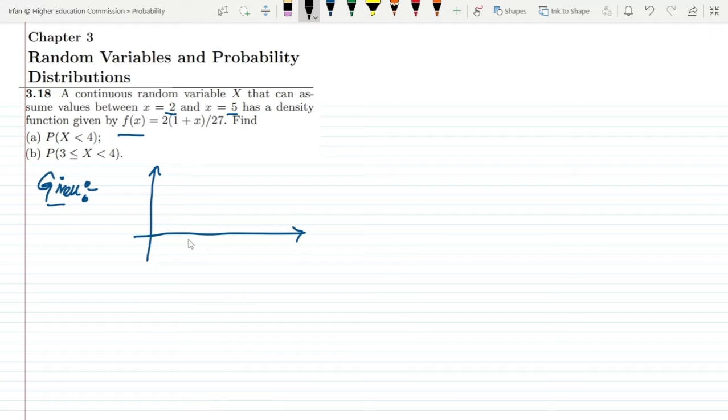The values here on the x-axis basically start from 2. This is 3, this is 4, and this is 5. All of these values have a value which is f(x) = 2(1 + x) / 27. As the value of x is available here, we can see that this is a linear function. Most probably it will be like this one—it will be a linear function. I have to find it out. Here we have this f(x) and on the x-axis we have this random variable x.